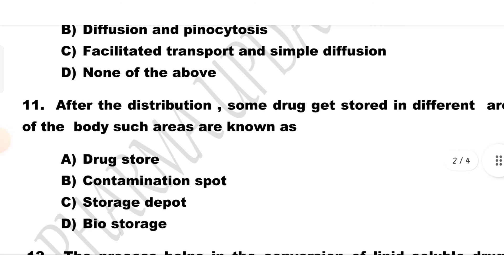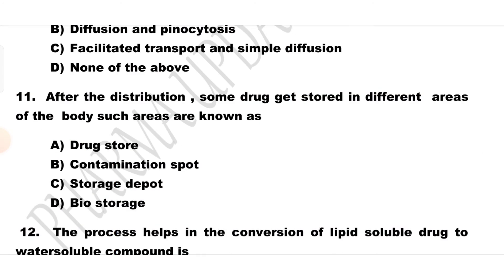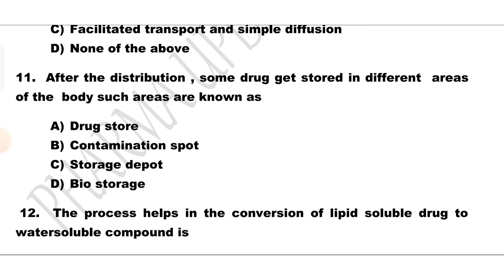Question number 11. After distribution, some drugs get stored in different areas of the body. Such areas are known as drug storage areas. Option B: Contamination spot, Option C: Storage depot, Option D: Bio storage.